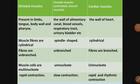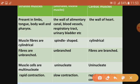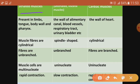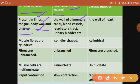Coming back to the comparative study: striated muscles are present in your limbs — hands and legs — then the tongue, body wall, and pharynx. Smooth muscles or unstriated are present in the internal organs, so they are called visceral muscles. They are present in the wall of the alimentary canal, which is the digestive tract, blood vessels, respiratory tract, and urinary bladder. Cardiac muscle is present in the heart.